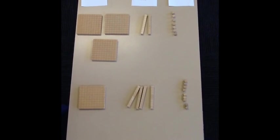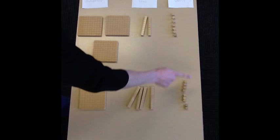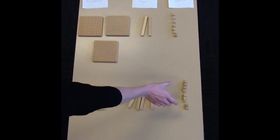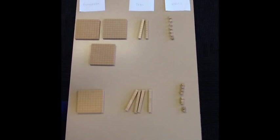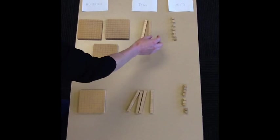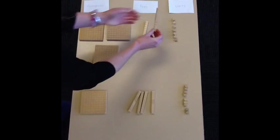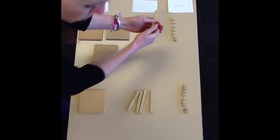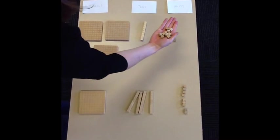We always start with our units when we're subtracting. So let's have a look over here. Can we do 7 take away 9? Well, 9 is the bigger number, as you can see. So we can't take 9 away from 7. We're going to have to do some trading here. So let's go across to our tens. I'm going to borrow one of these tens to give it to our units. But as I can't physically break this up, I'm going to exchange it for 10 units here.